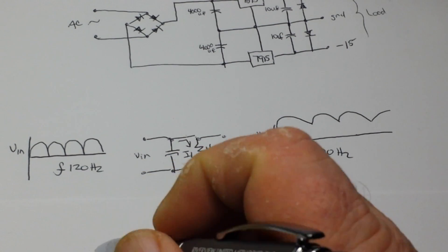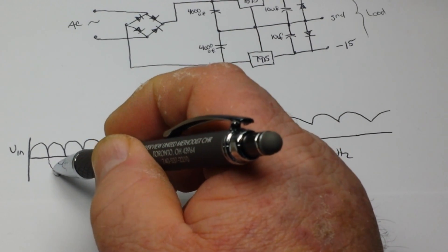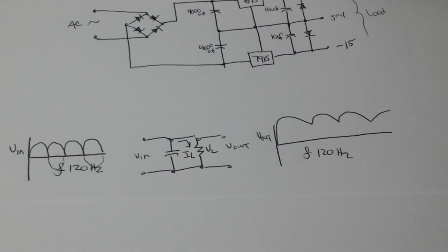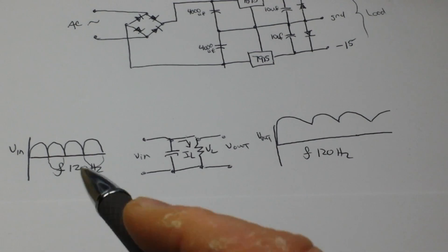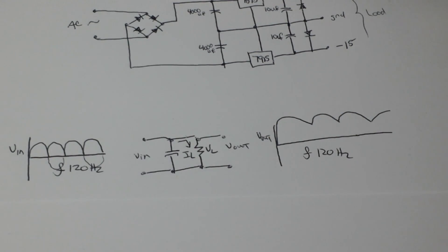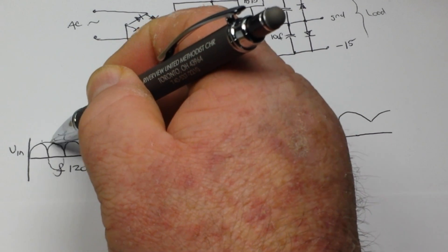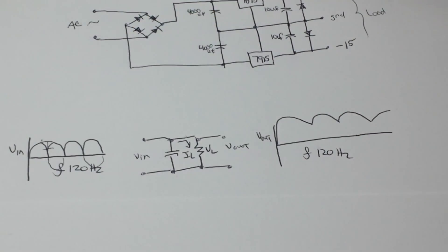What that rectifier has done is it has taken those negative-going peaks and flipped them up. In doing so, it has doubled the frequency. Our 60 hertz is now 120 hertz.